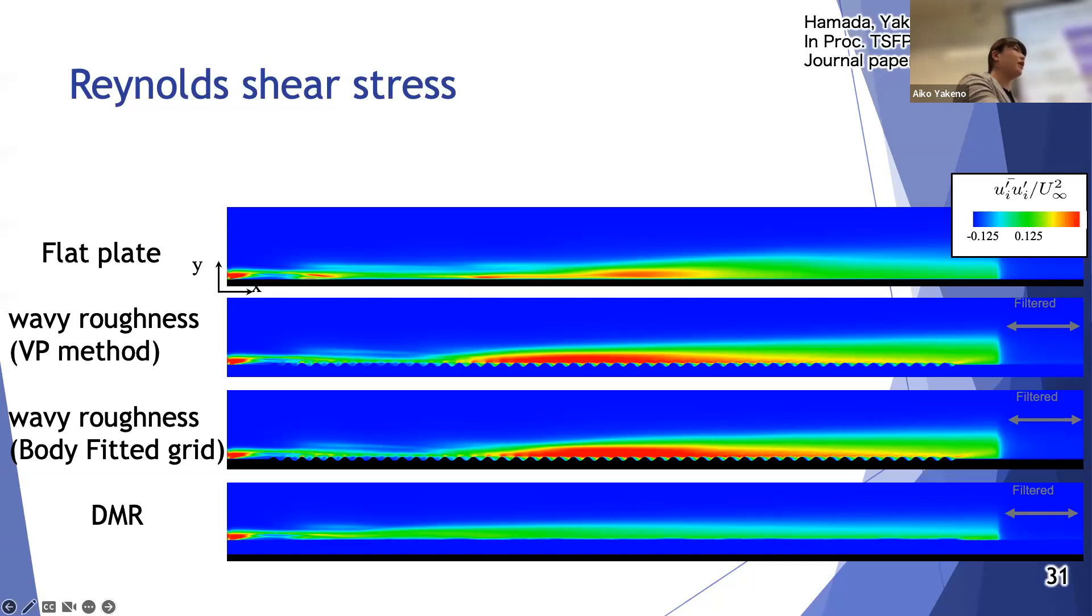And also the spanwise distribution should be able to easily break the TS wave before it becomes large enough.